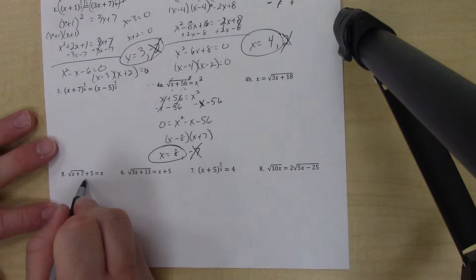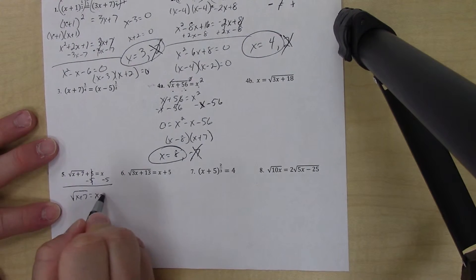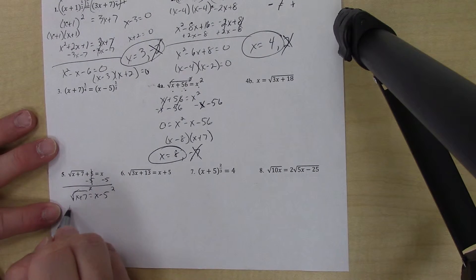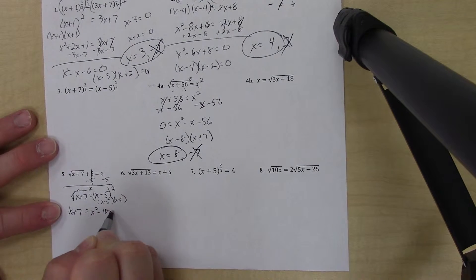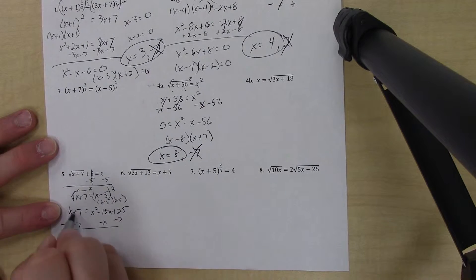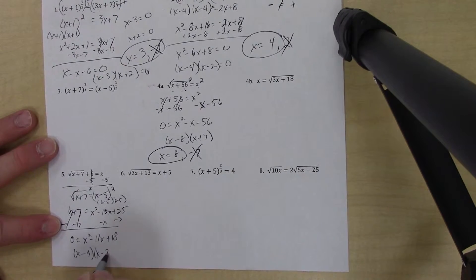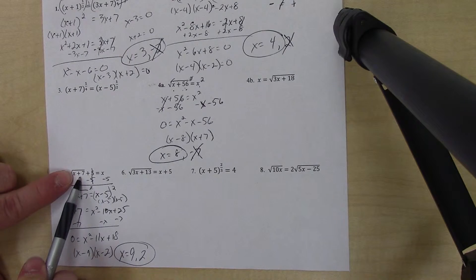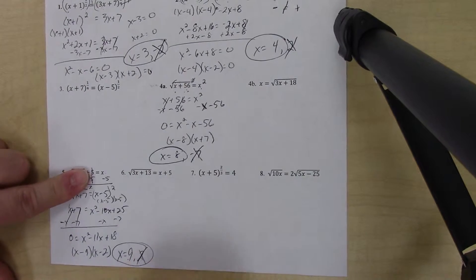For problem five, to isolate the square root I subtract five first, giving the square root of (x plus 7) equals x minus five. Squaring both sides and canceling: x plus seven equals (x minus five) squared, which is x squared minus ten x plus twenty-five. Bringing everything to one side: zero equals x squared minus eleven x plus eighteen, which factors to (x minus nine)(x minus two), giving x equals nine and two. Checking x equals nine: square root of sixteen is four, plus five is nine — works. Checking x equals two: square root of nine is three, plus five is eight, not two — so two is extraneous. The answer is x equals nine.